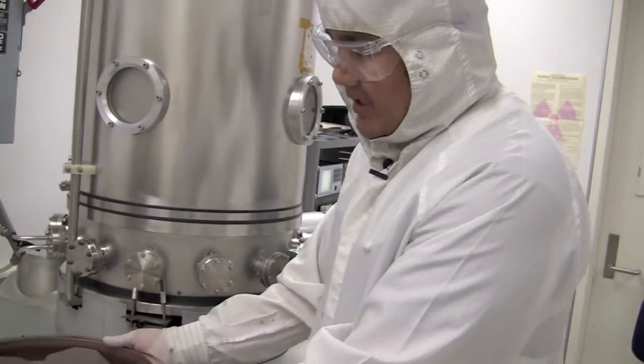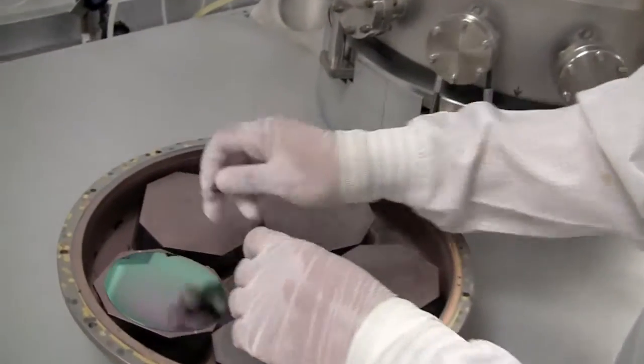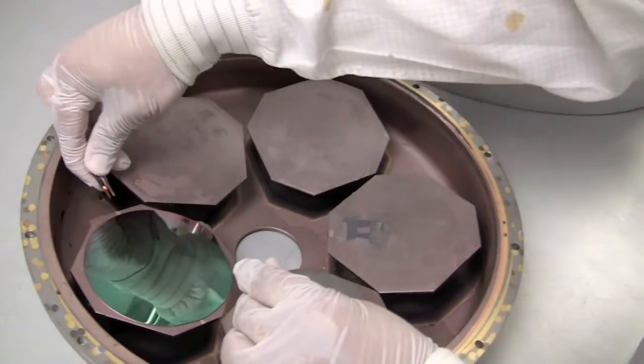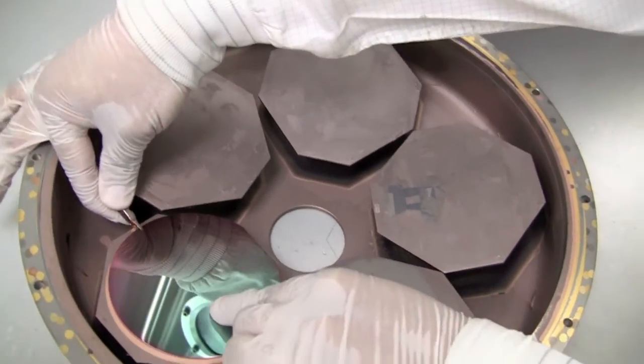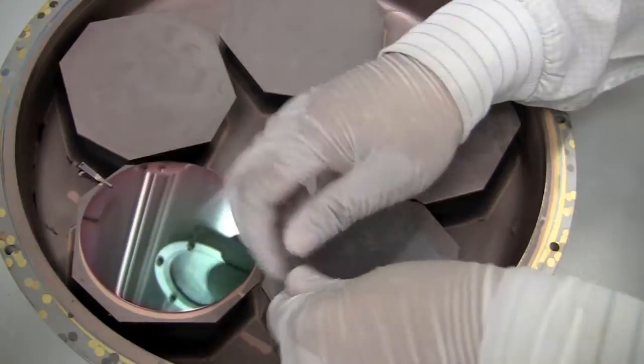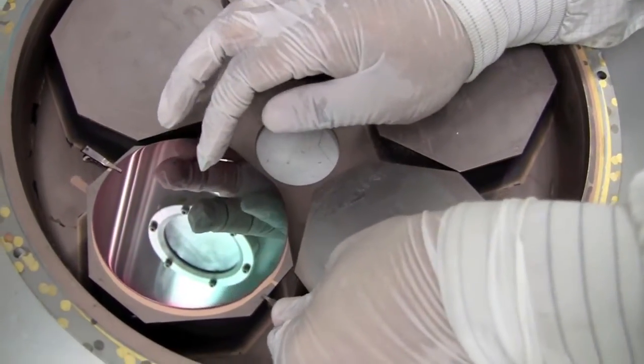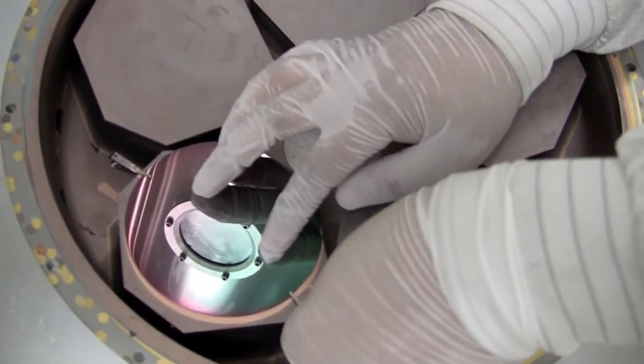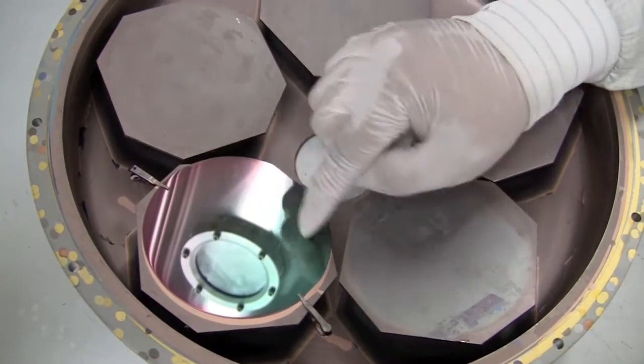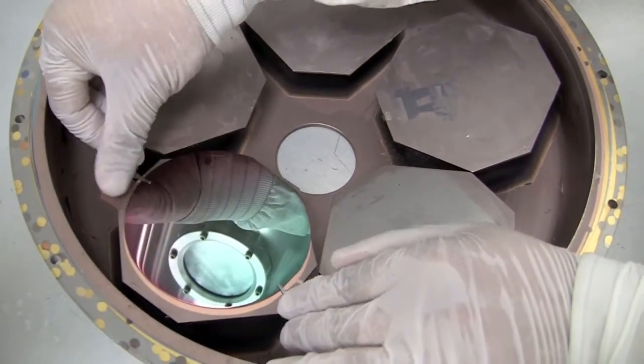So if you look at this sample holder, we put the wafer on here and we're going to clip it onto here because actually this whole thing is inverted in the machine so you don't want the sample to fall. I use clips, but you can also use thermal Kapton tape.